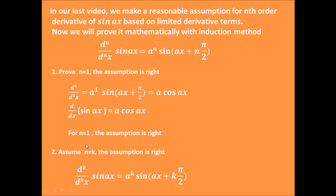The second step is to assume this assumption is right when n equals k. So when n equals k, the kth order derivative of sine ax equals a to the power of k times sine of ax plus k pi divided by 2.